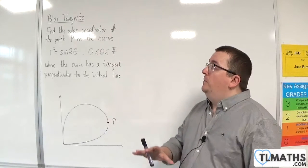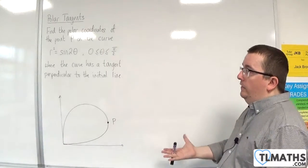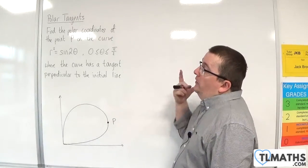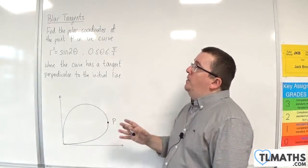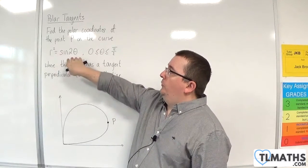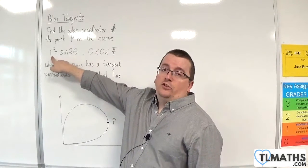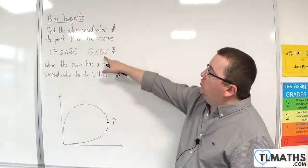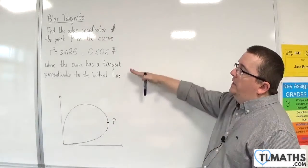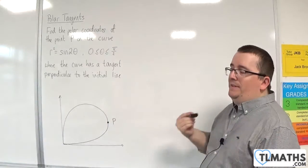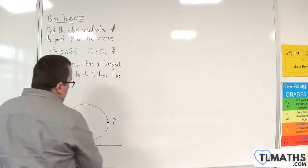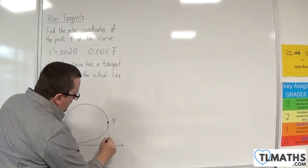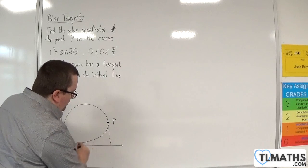Following up the previous video with a very similar looking equation and diagram. We're going to find the polar coordinates of point P on the curve r² = sin(2θ), where θ is restricted between 0 and π/2 inclusive, and where the curve has a tangent perpendicular to the initial line. So point P is the point on the curve where there is a tangent line that is perpendicular to the initial line.